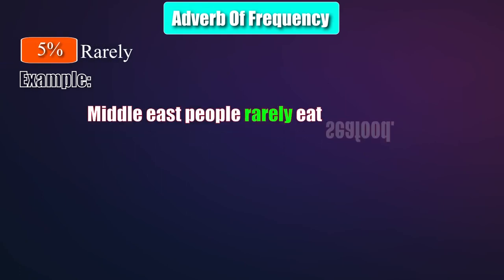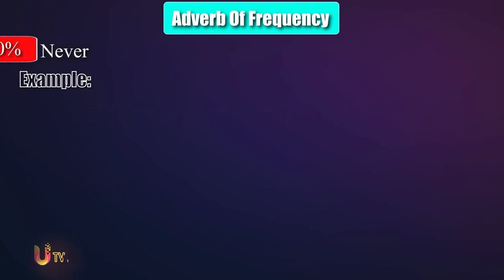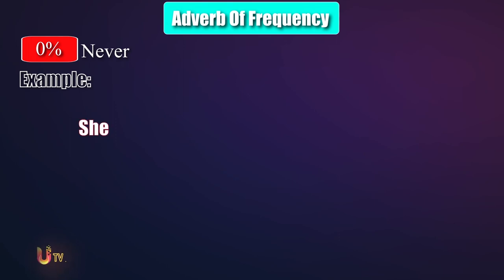Middle Eastern people rarely eat seafood. As you notice, since 'rarely' shows only 5%, there would be an exception for this action to happen. And the last one: she never dances. 'Never' shows zero percent and is used to describe actions that have never happened.